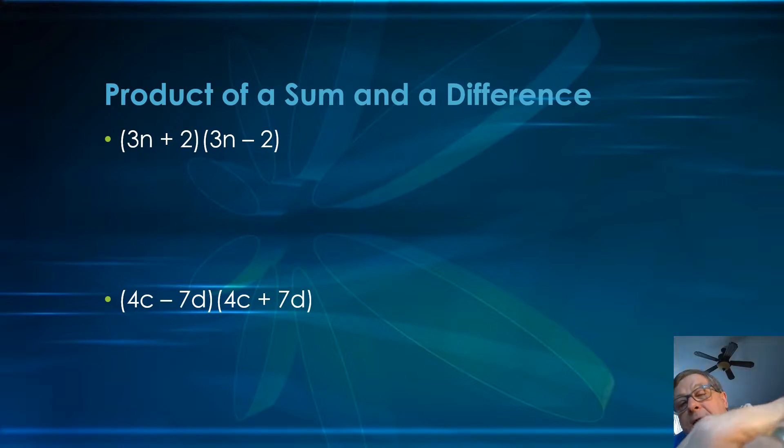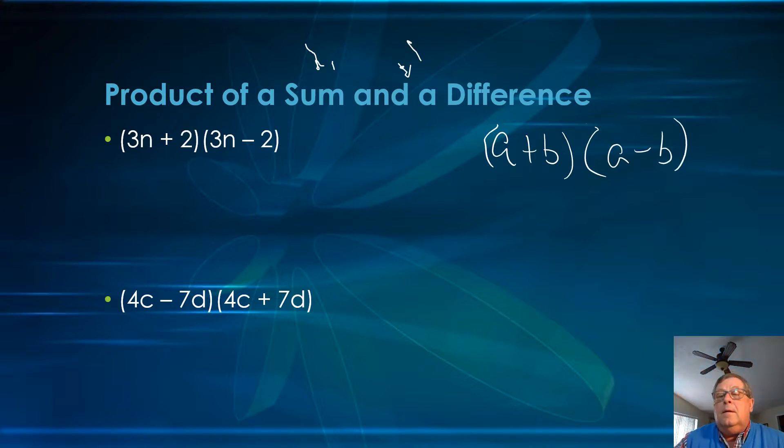Let's say we've got a plus b times a minus b. We've got two binomials here. Our first and last terms, or first and second terms, in each binomial are the same.